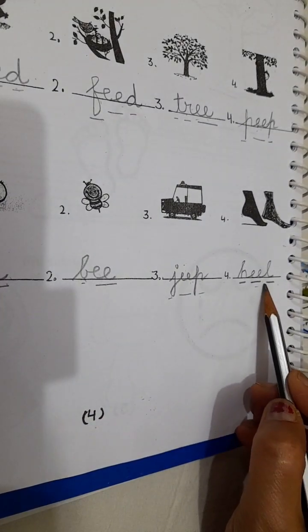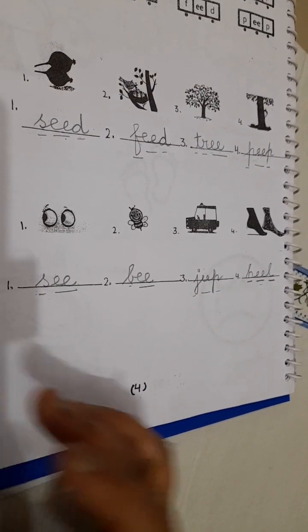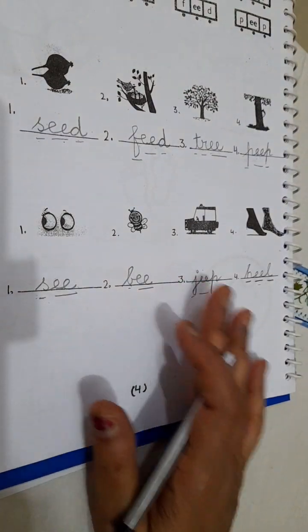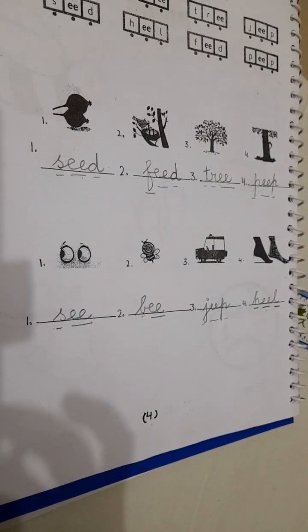Jeep, heel. Okay. So complete this work in your book. Learn all the words, you have to learn to read first and then learn the spellings. Okay, thank you children. That's all for today.